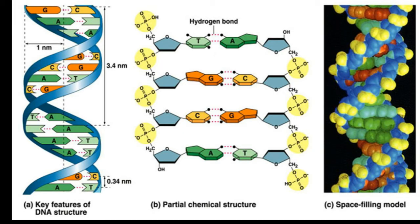Here you can see a piece of DNA: a model on the left, a chemical model in the middle, and a space-filling model on the right. The chemistry of the DNA molecule in the middle shows a polynucleotide array with a specific base pairing pattern. You can notice the double hydrogen bonds between adenine of one strand and thymine of another strand. Similarly, there are three hydrogen bonds between guanine of one strand and cytosine of another strand, and vice versa.